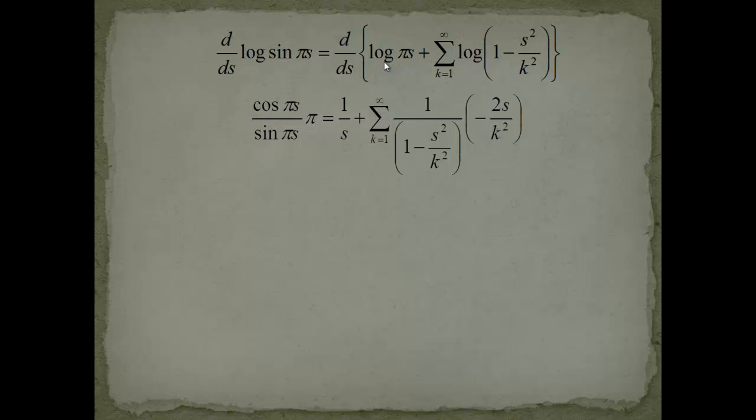On the right-hand side, this logarithm of pi s will give you 1 over pi s multiplied with pi, so the pi just cancels. On this side, we just have this body in the denominator, and then we differentiate this body with respect to s. If you differentiate this with respect to s, this will become 0 minus 2s over k squared.